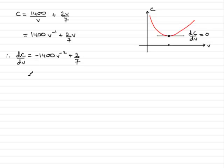Let's tidy this term up. This becomes minus 1400 times 1 over V squared, which is just going to be that over V squared, and then plus two-sevenths.